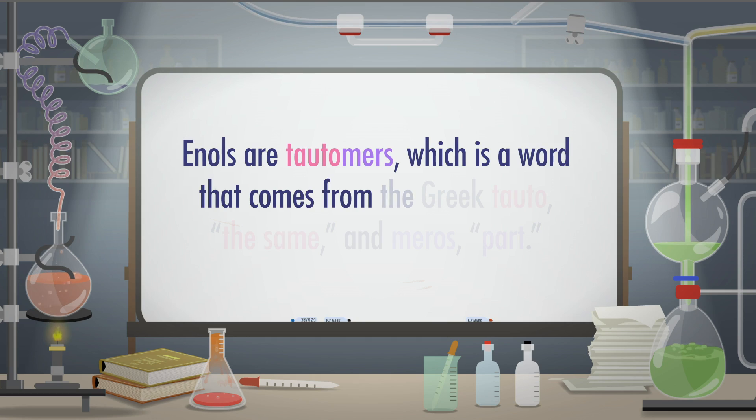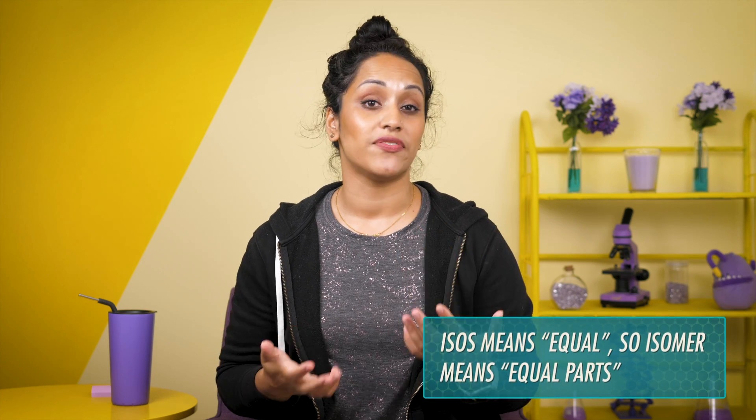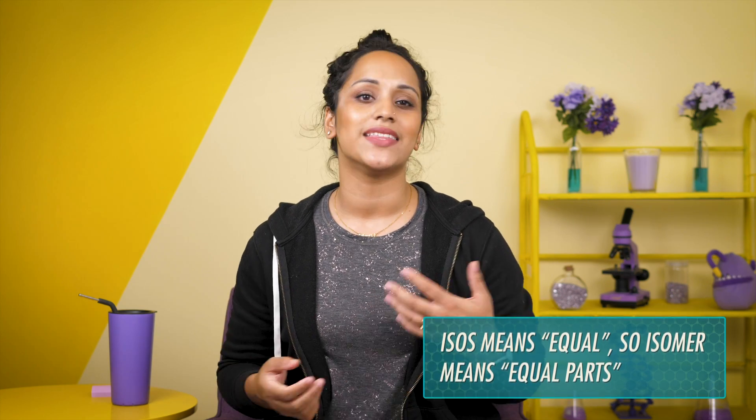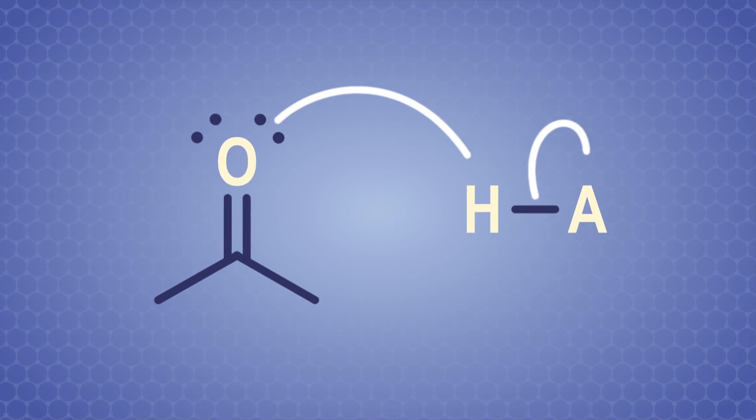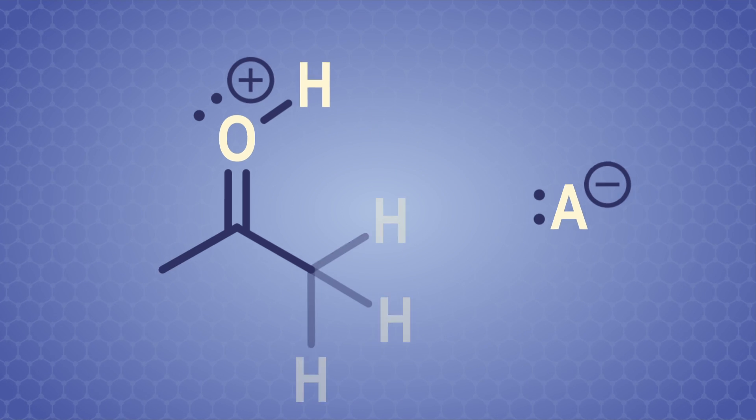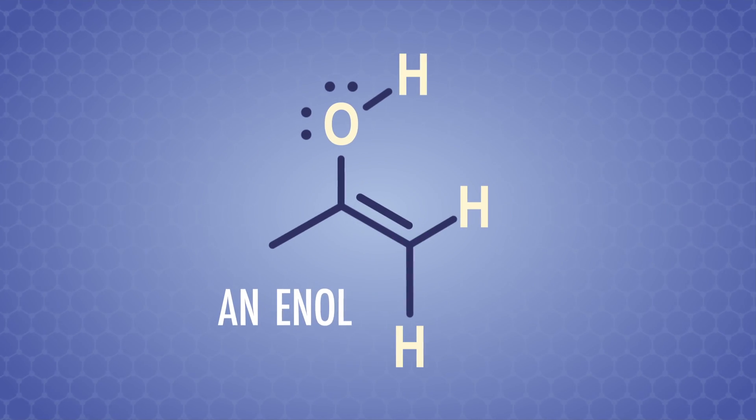Enols are tautomers, a word that comes from the Greek tauto meaning 'the same' and meros meaning 'part.' Tautomers are a specific kind of isomer where the only difference between the two compounds are the positions of the hydrogens and the electrons — the carbon skeleton is the same. Even though a carbonyl and an enol might look different at first glance, they have the same basic structure of three carbons. When a carbonyl oxygen atom is protonated, we get an intermediate cation. Then this intermediate loses a proton from its alpha carbon, which is the carbon adjacent to the carbonyl, creating a neutral enol. Enols are a type of alkene, and because of resonance electron donation from the lone pair on the oxygen to the pi bond, enols are more electron-rich and better nucleophiles than alkenes without an electron-donating group attached.